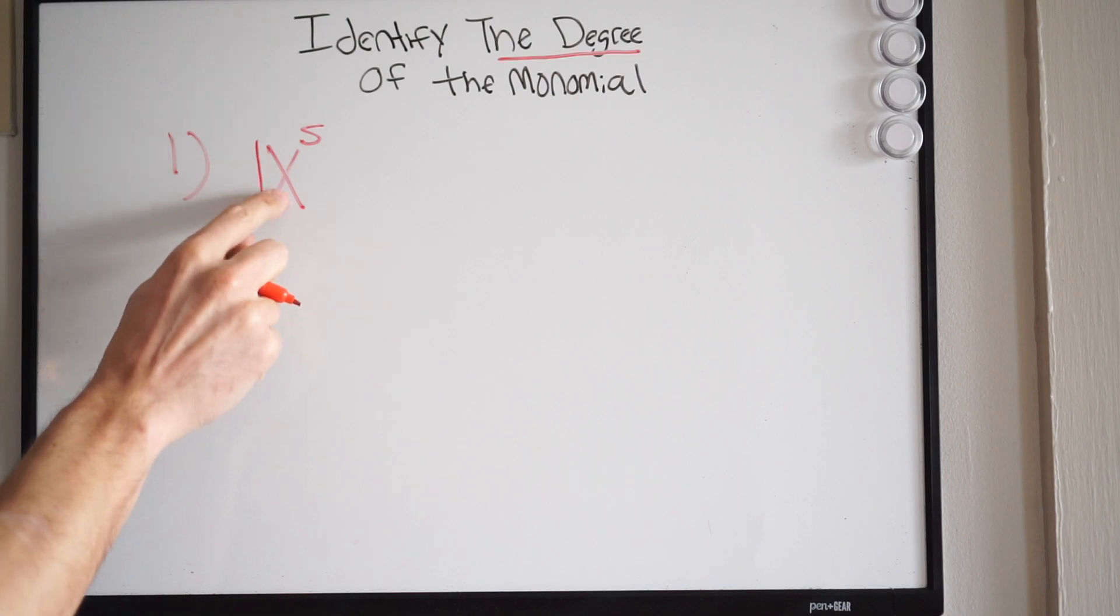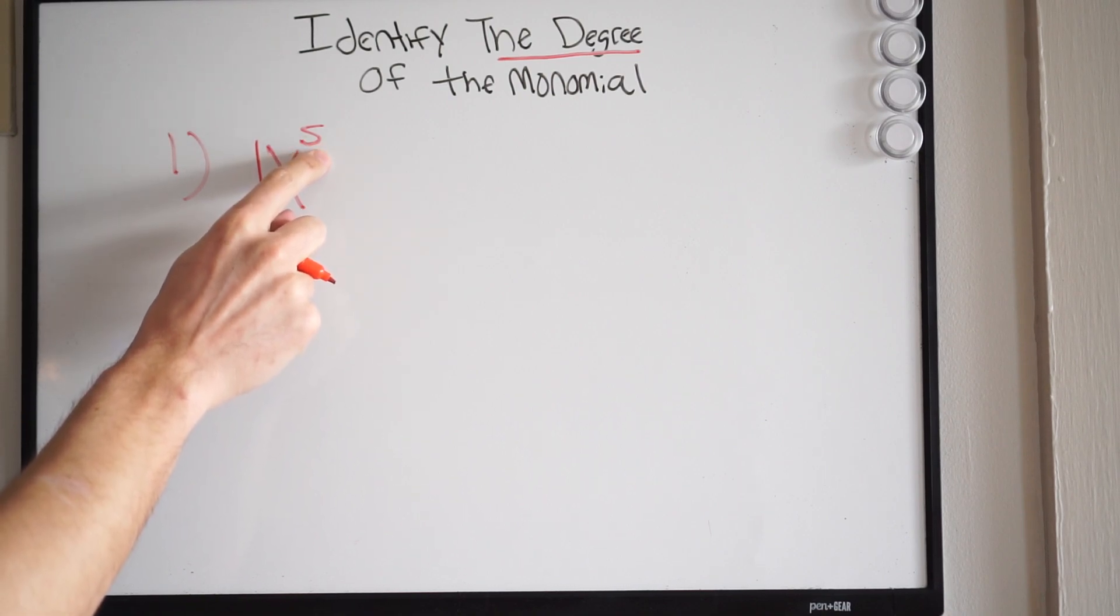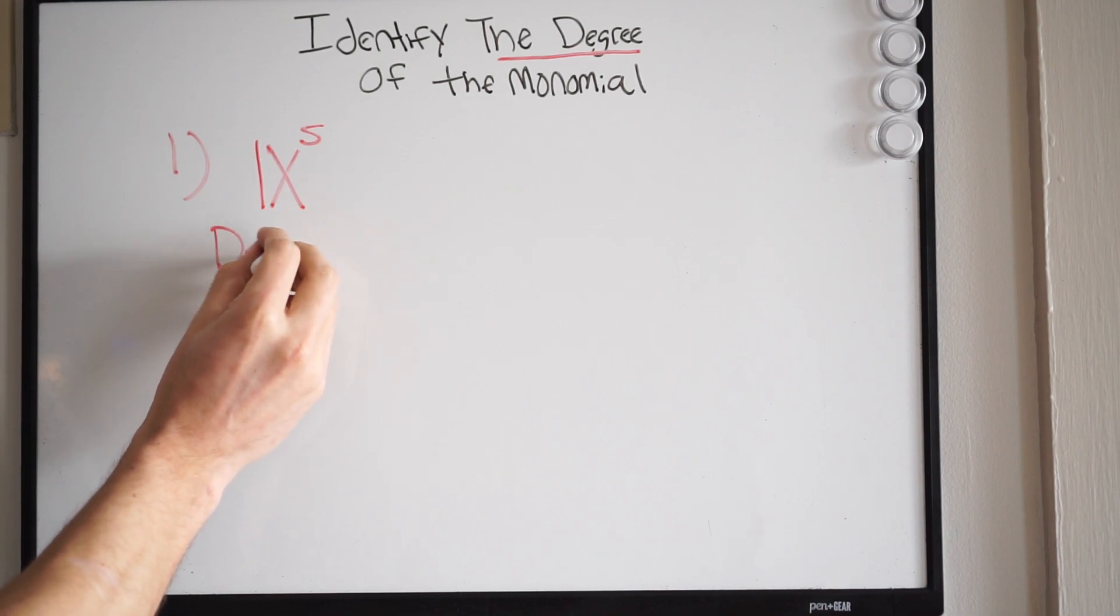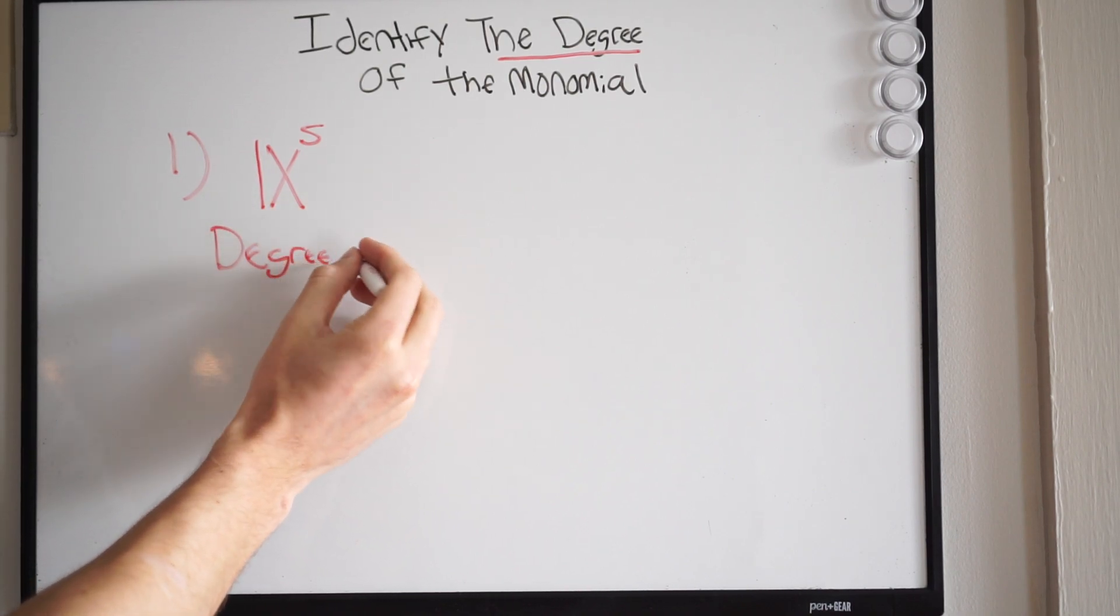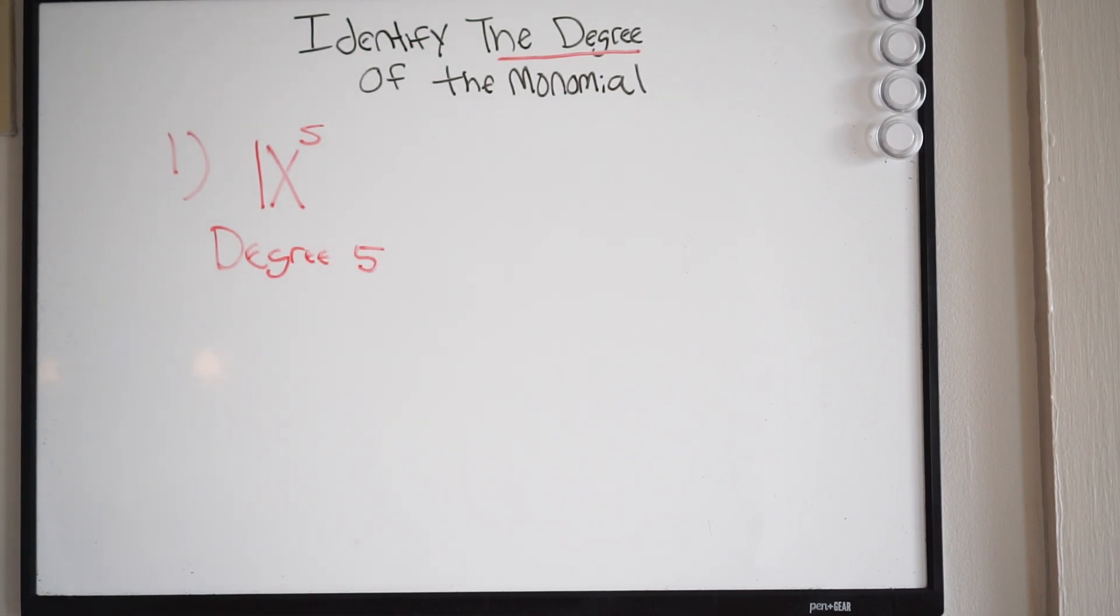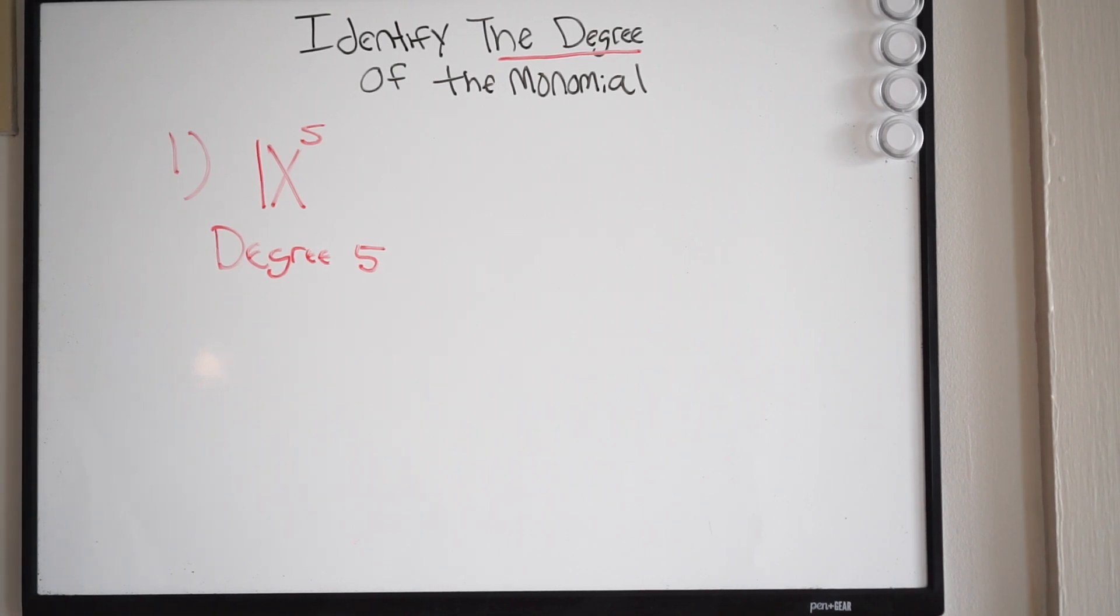Okay. But we're looking at the variable exponent, which is 5. So my degree here, my degree, is going to be 5. Alright, degree of 5.